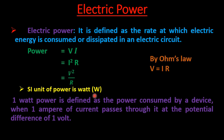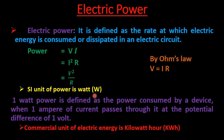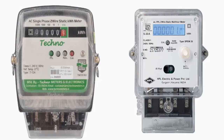Electric power is measured in the SI unit watt, but electric energy consumed in houses is measured in a unit called kilowatt-hour, which is the commercial unit of electric energy. Every house with an electricity connection has an electricity meter, which is used to calculate the amount of electricity consumed. The reading on this meter is used to calculate the electricity bill, and its measuring unit is kilowatt-hour (kWh).